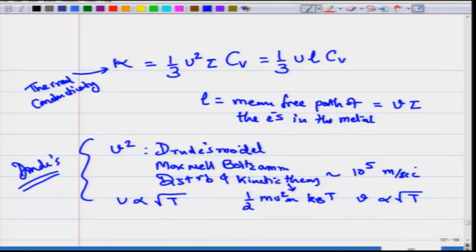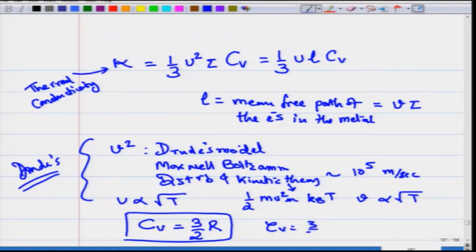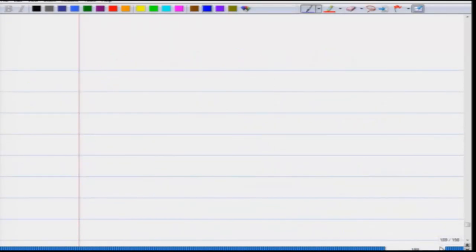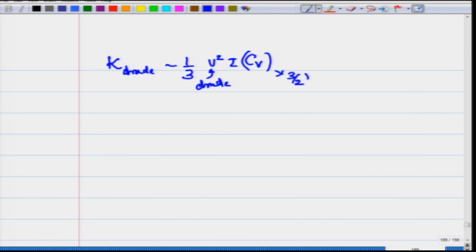In Drude's model, the velocity was 10⁵ m/s and the specific heat of the electron was (3/2) R. Capital C_V is (3/2) N k_B per unit volume, which gives (3/2) R. Therefore, in Drude's theory the thermal conductivity kappa from Drude is (1/3) V² tau times C_V, which is (3/2) R, with the velocity being 10⁵ meters per second.